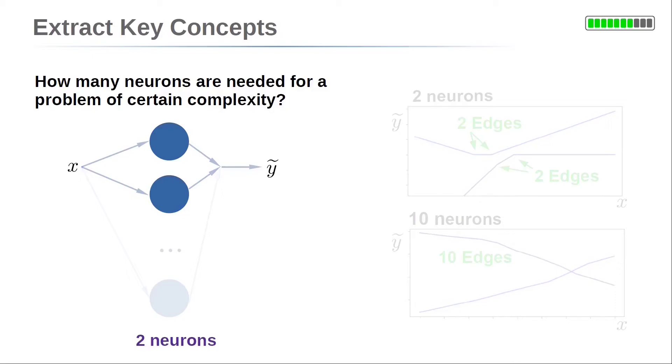In this example, we consider a special type of neural network. For these neural networks with two neurons, you can approximate functions with three line segments. That means such a function has two edges. You can see examples of such functions on the right side.